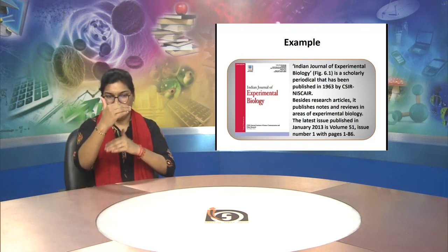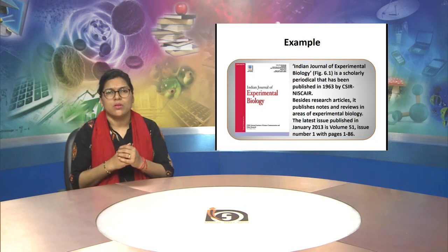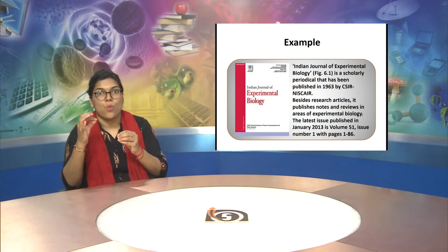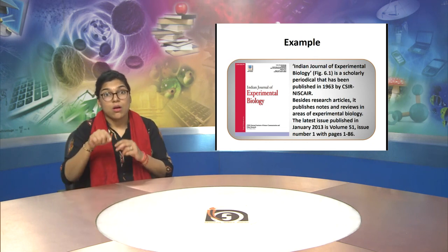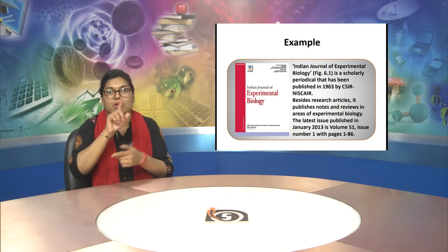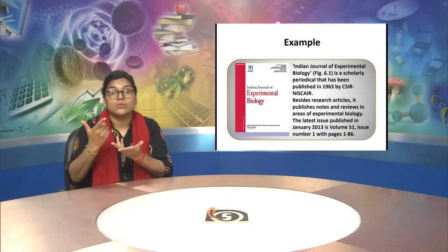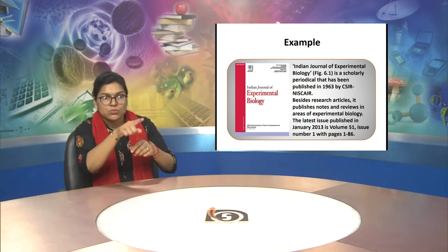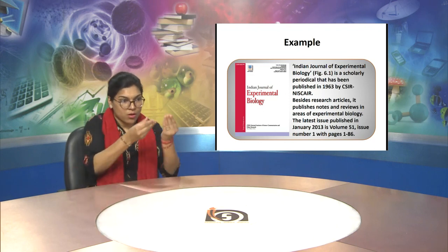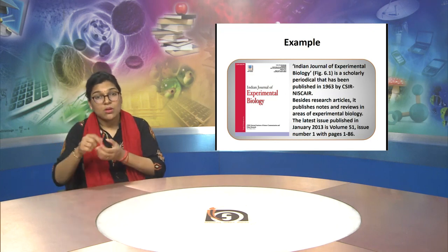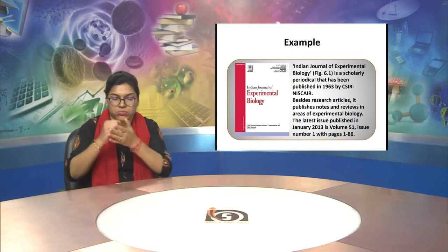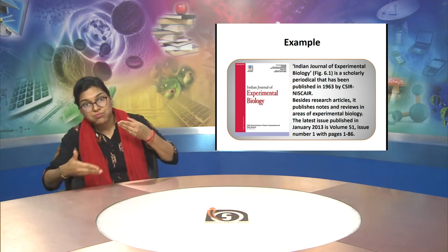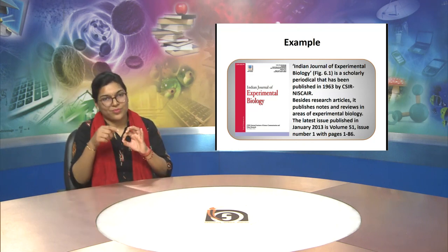Now there is an example which you can see on screen. This is the Indian Journal of Experimental Biology as an example. It is a scholarly periodical that has been published since 1963 by CSIR-NISCAIR. Besides research articles, it publishes notes and reviews in the field of Experimental Biology. The latest issue published in January 2013 is Volume 51, Issue No. 1, with pages 1 to 86.